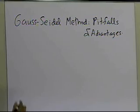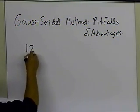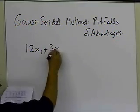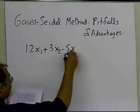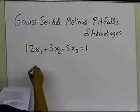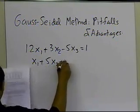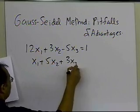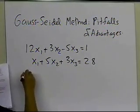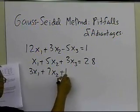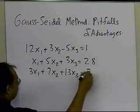If you look at the example which we have taken in the previous segment, we had 12x1 + 3x2 - 5x3 = 1, we have x1 + 5x2 + 3x3 = 28,